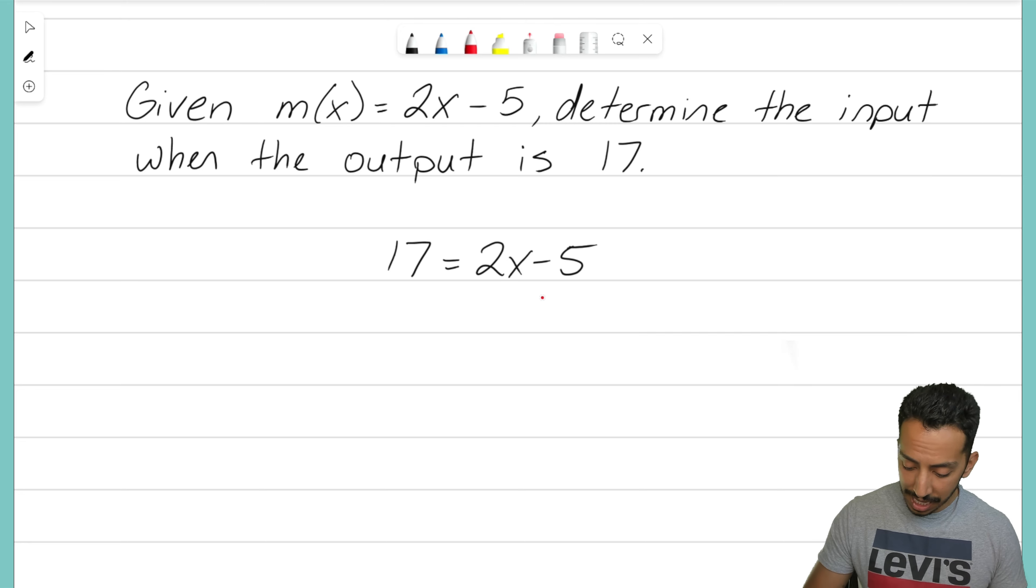First things first is let's add that positive 5. We want to move that 5 on over. These 5s here are going to zero out for us. On the right side we're just going to have left over our 2x. Nothing else is touching it. On the left side we have 17 plus 5. That ends up equaling 22.